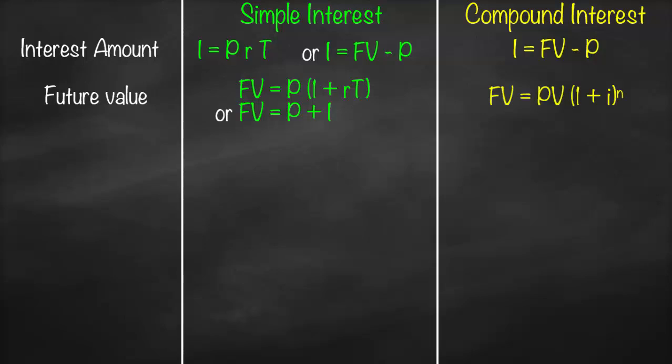For compound interest, we have only one formula for future value, which is: future value equals present value multiplied by (one plus i) all to the power n.